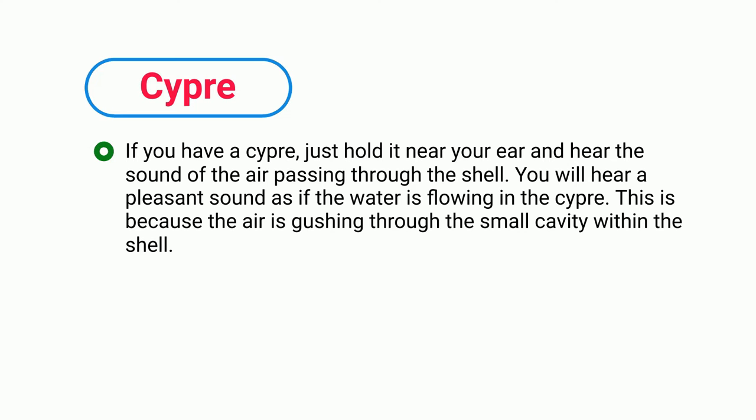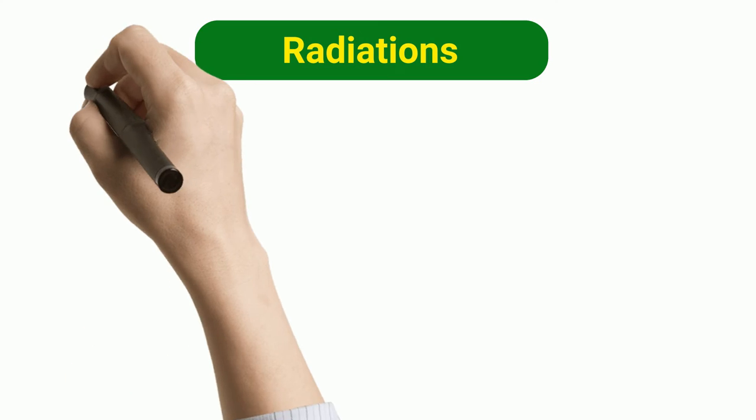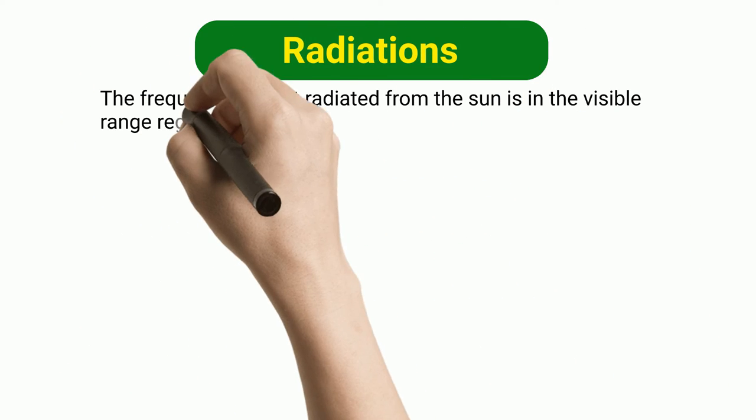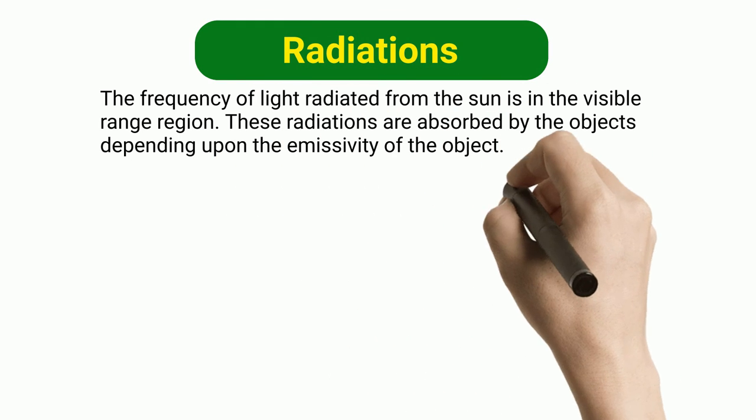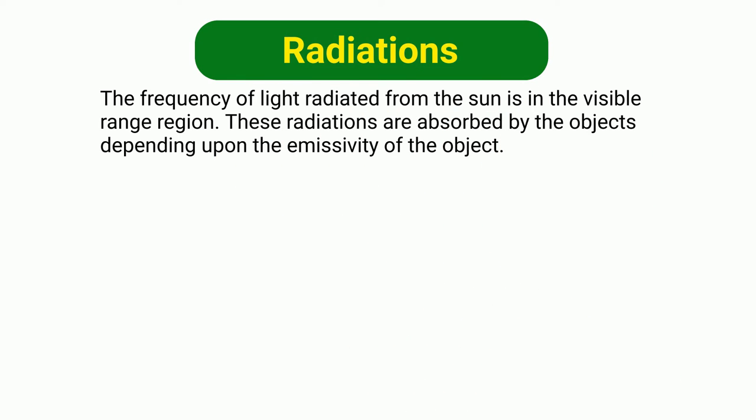Radiations: The frequency of light radiated from the sun is in the visible range region. These radiations are absorbed by the objects depending upon the emissivity of the object.